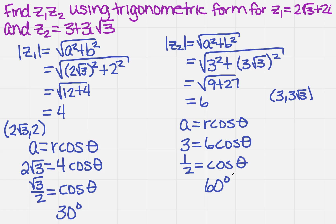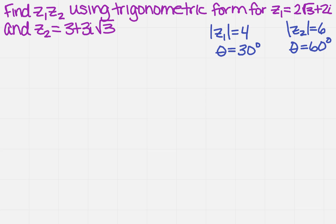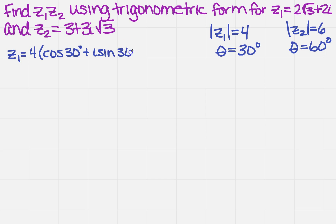Now I'm going to plug these into our equations. I'll clear the board and preserve the information we obtained in the upper right-hand corner. We need to plug in for each Z1 and Z2 into the formula to write the trigonometric form. So for Z1, that's going to give me 4 times the cosine of 30 degrees plus i sine 30 degrees. And for Z2, we got r equals 6, so that's 6 times cosine of 60 plus i sine of 60.